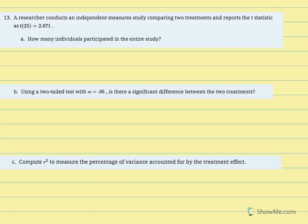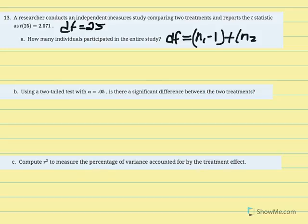Number 13: a researcher conducts an independent measures study comparing two treatments and reports the t statistic as t(25) equal to 2.071. The value in parentheses is always degrees of freedom, so degrees of freedom equals 25. Part A asks how many individuals participated in the entire study.